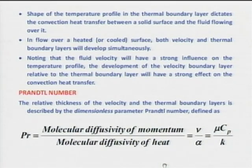The thermal boundary layer develops and grows simultaneously with the velocity boundary layer. These two are not mutually exclusive — when there is a flow and a temperature difference between fluid and solid, both the velocity and thermal boundary layers form at the same time. The shape of the temperature profile dictates the convective heat transfer coefficient, meaning the gradient of temperature at the wall — d(T)/dy — dictates the heat transfer coefficient.